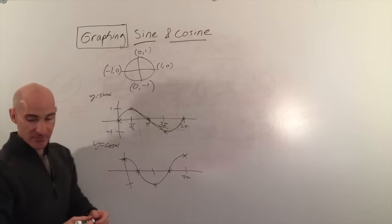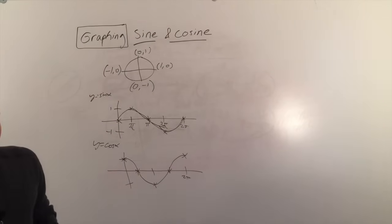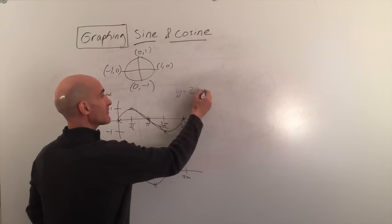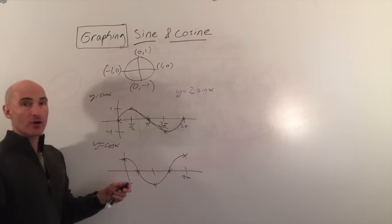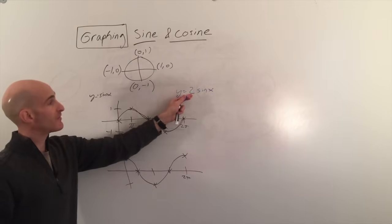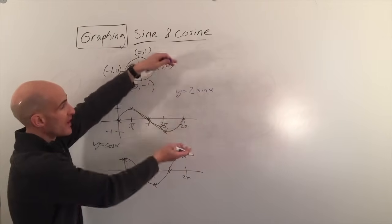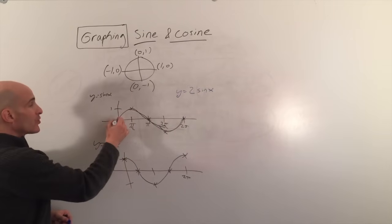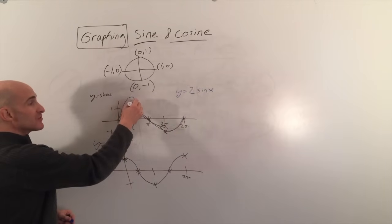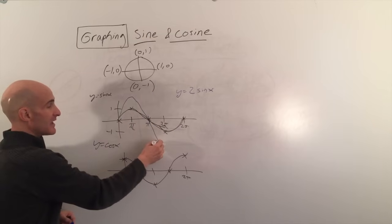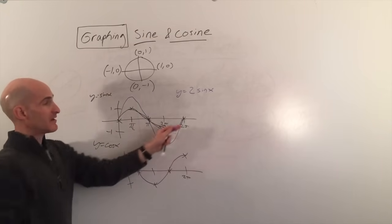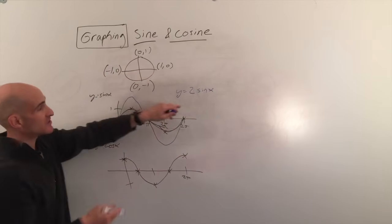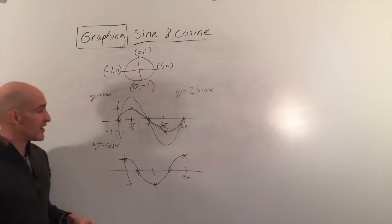Now, what happens if we want to graph y equals 2 sine of x? The 2 here is affecting the vertical stretch — this is the amplitude, the number right in front of the sine. So what that means is we're going to go up to positive 2, down to negative 2, and back to 0. We just stretched it. So the amplitude affects the vertical stretch.